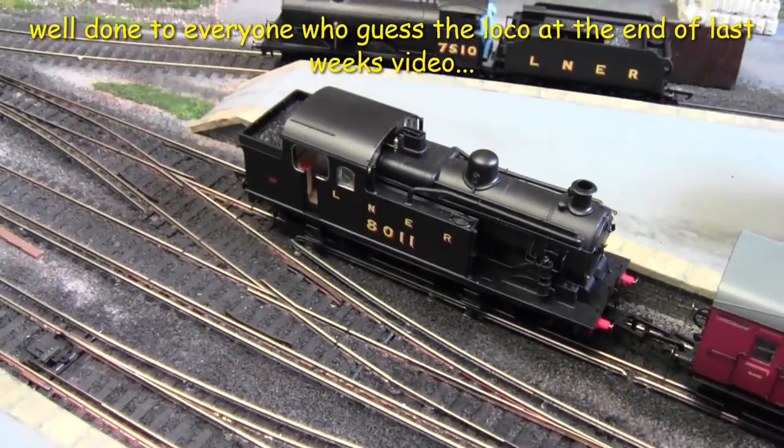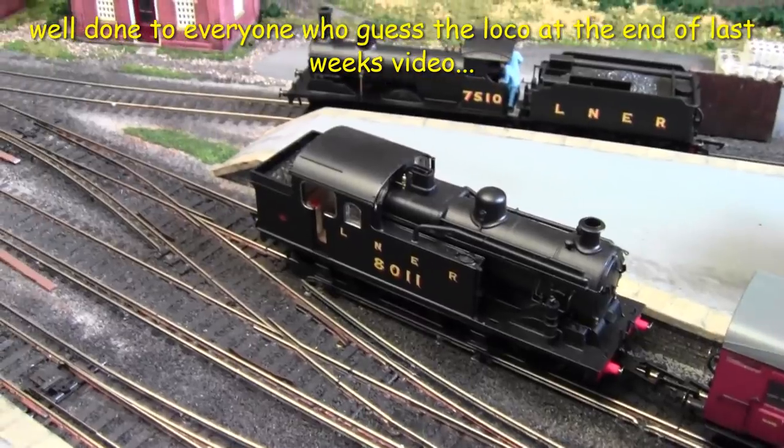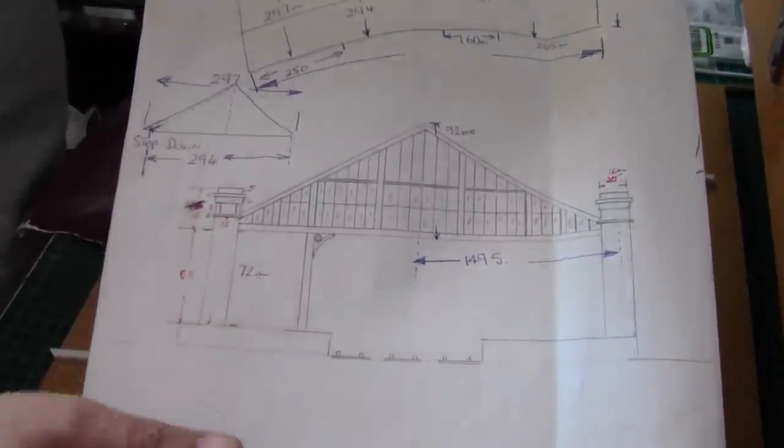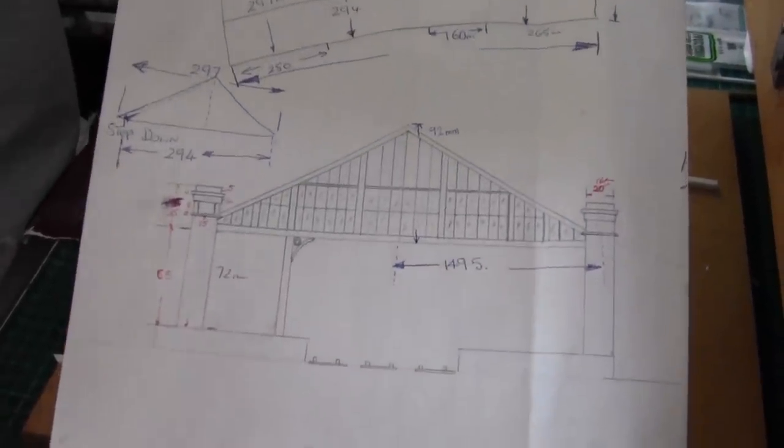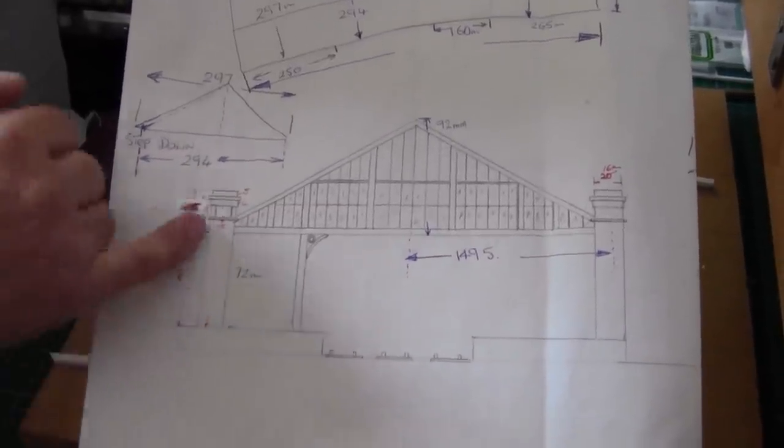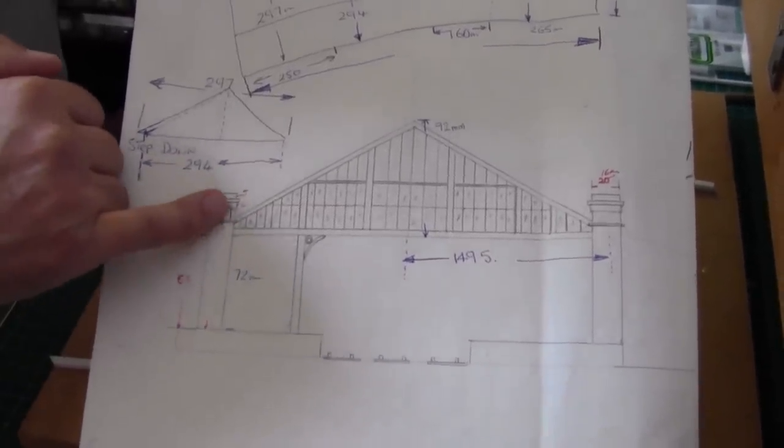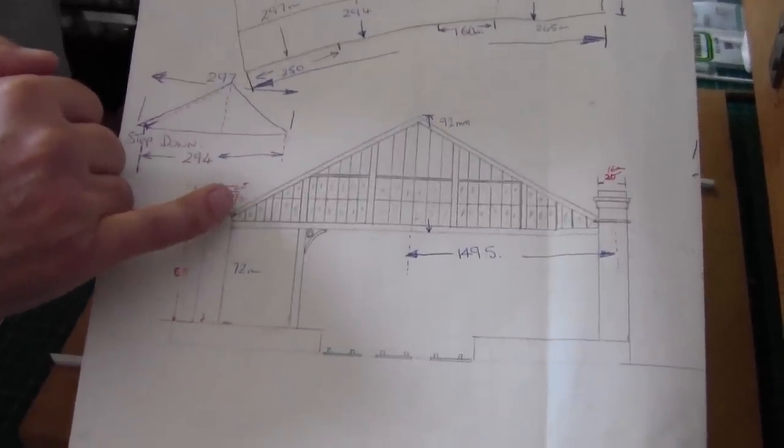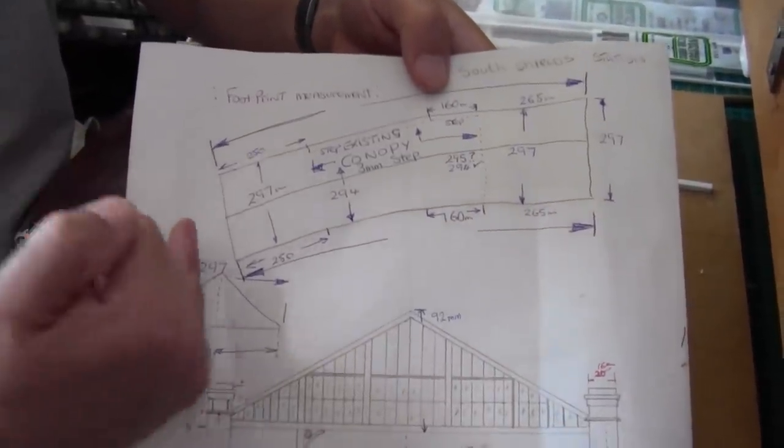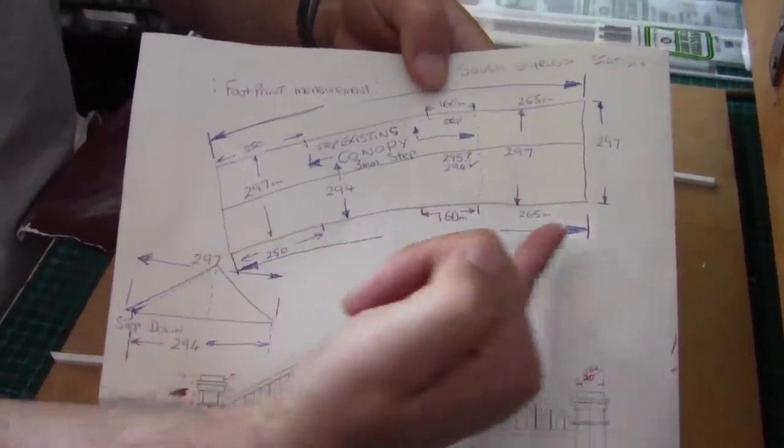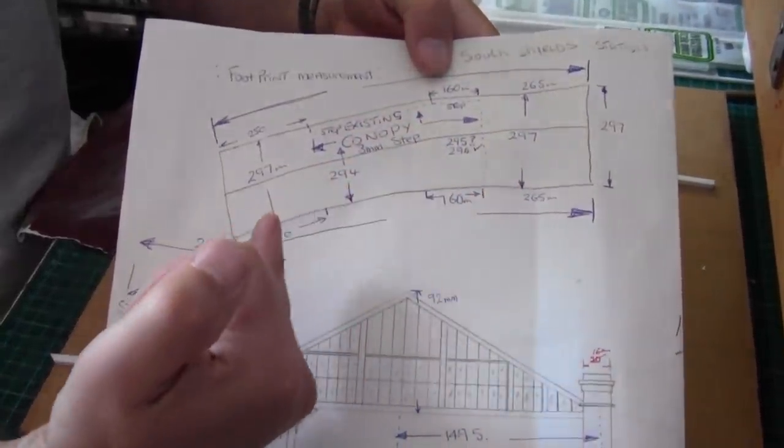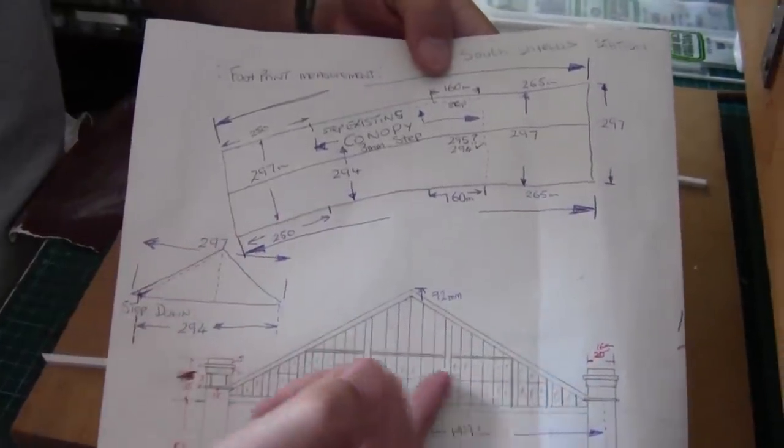The final scene in the last video was the N7 from Oxford Rails. So quite a few got that right. And you may remember this drawing from the last video. Because we used it to get the size of these capping stones. And as you can see, I've done a lot more measurements since then. This is regarding the main structure of the roof. But I needed to do this in order to find out how I'm going to make the fascias.